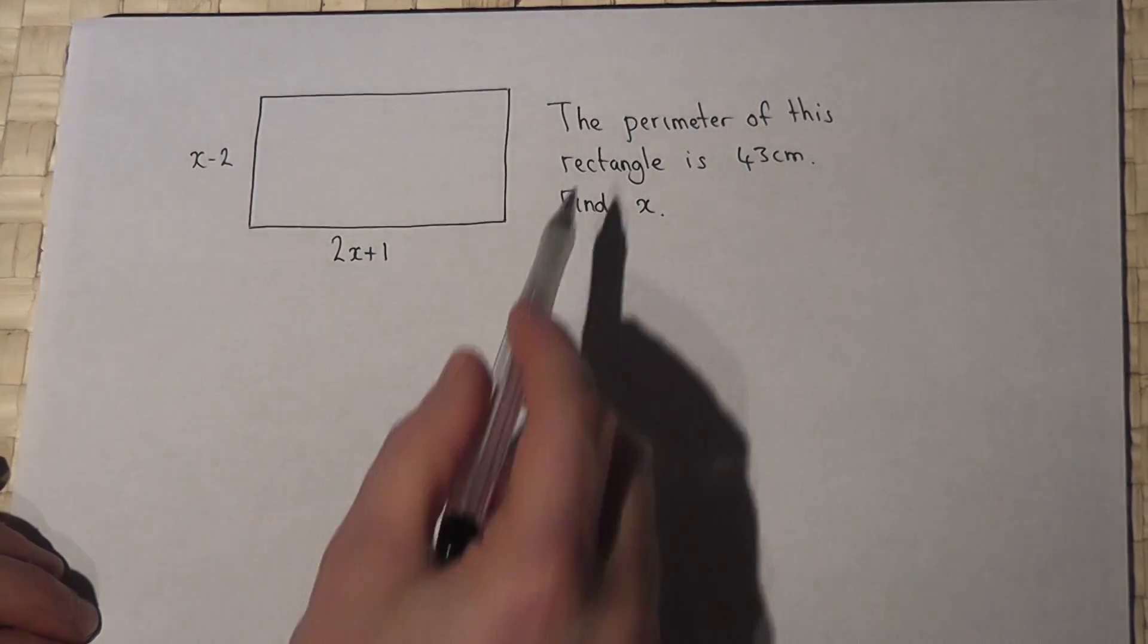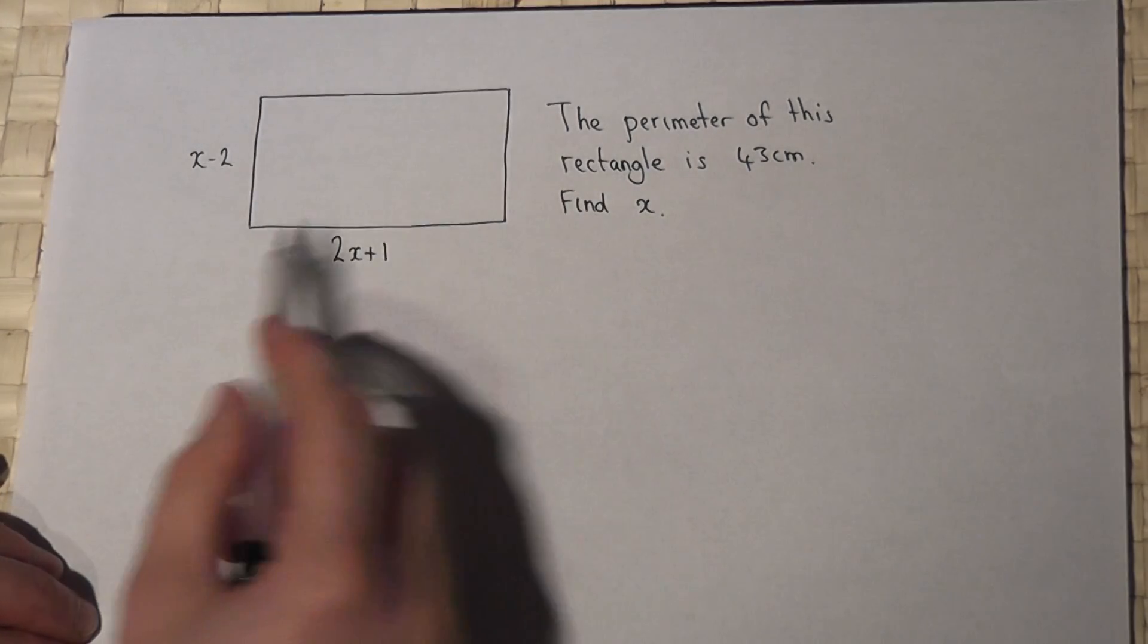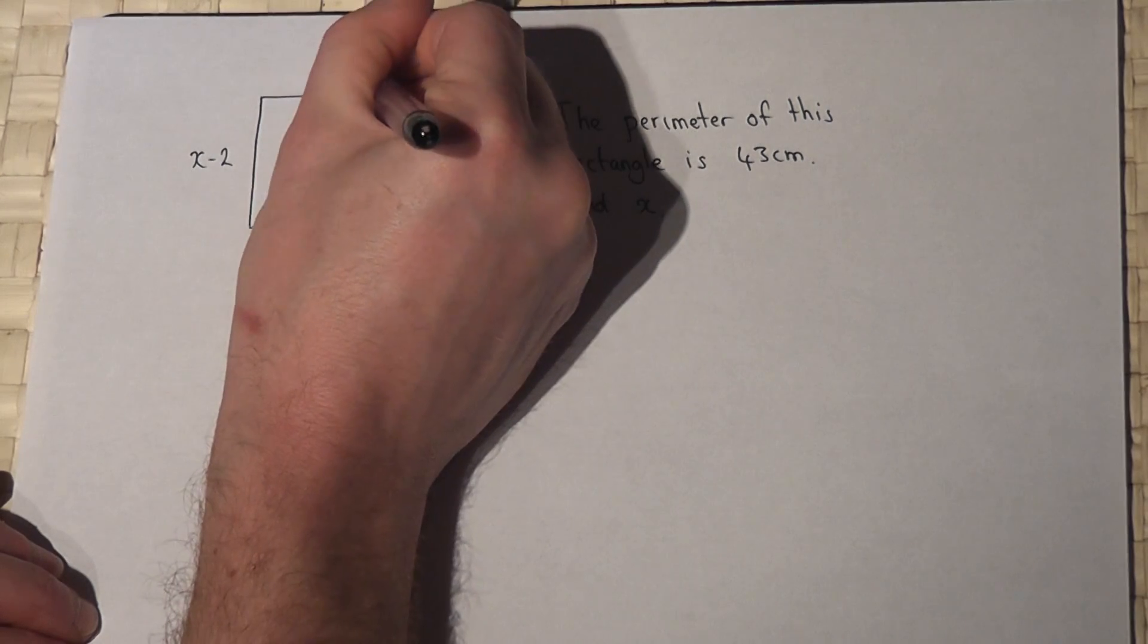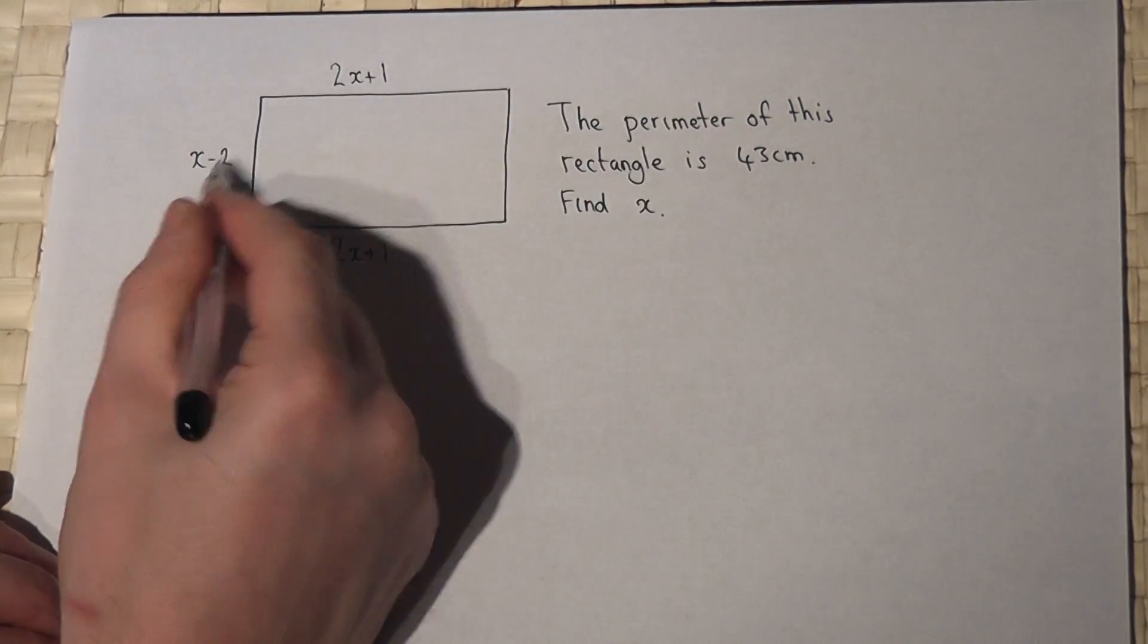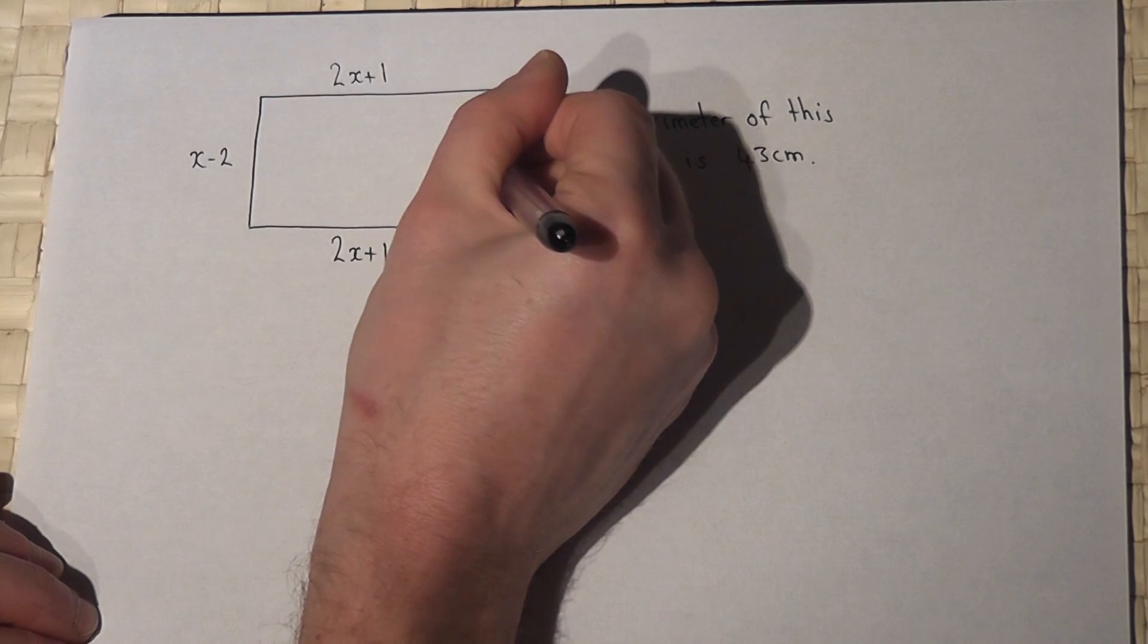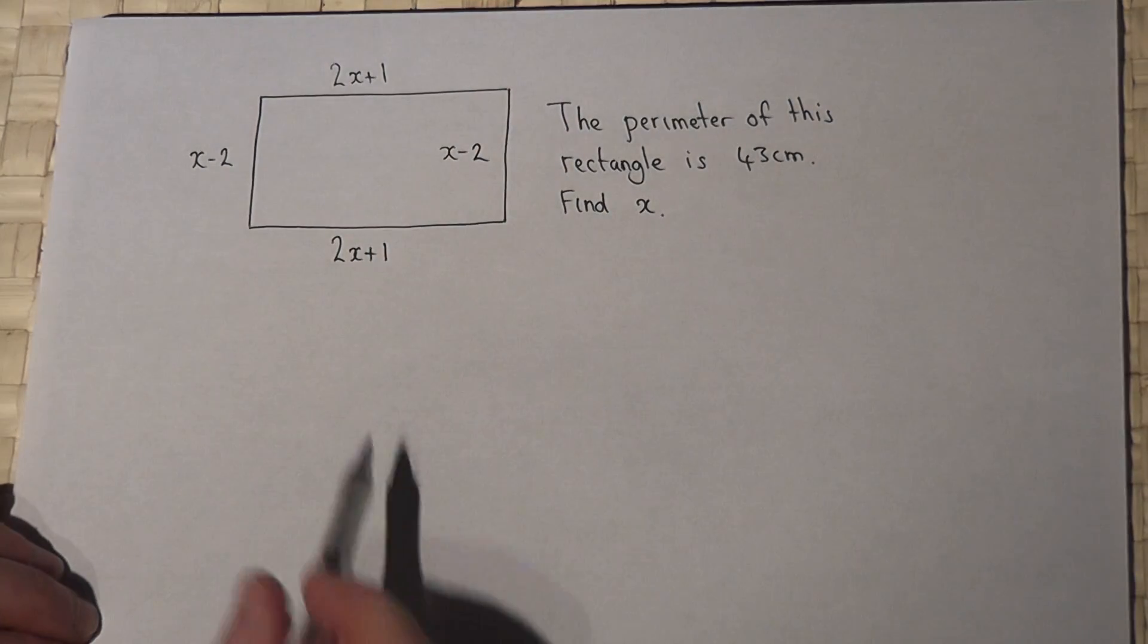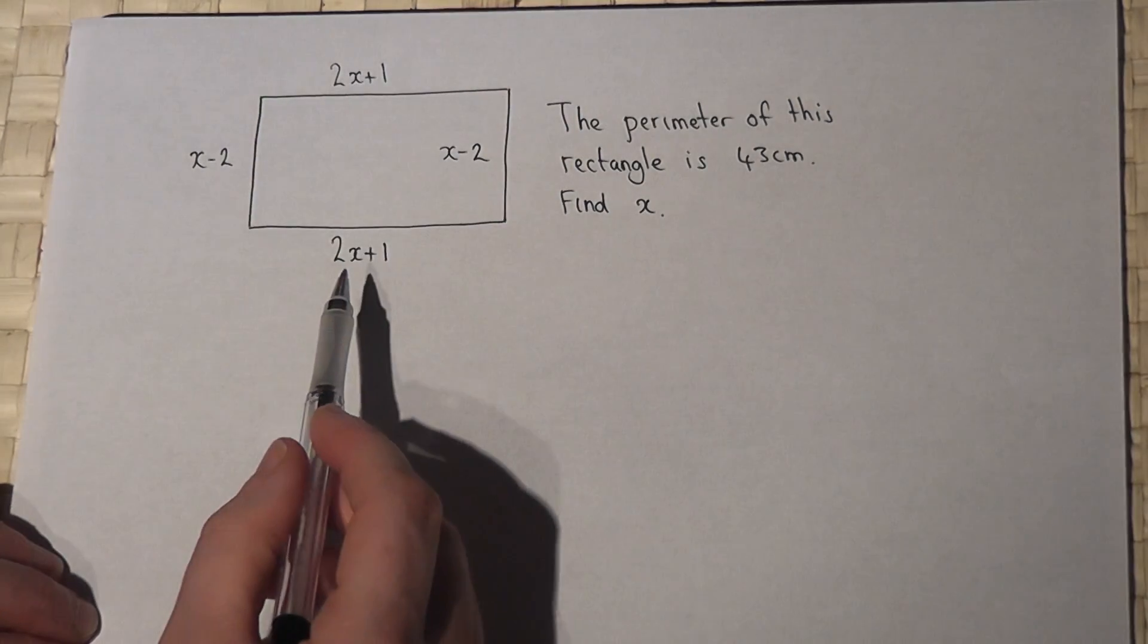Now because this is a rectangle we know that this side here must be the same as this side here, and this side here must be the same as this side here. So the sum of these four sides must equal 43.